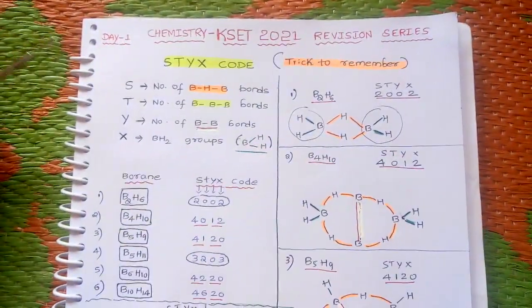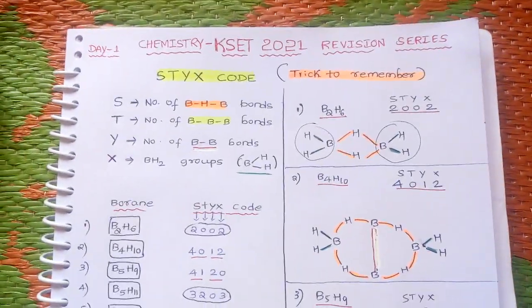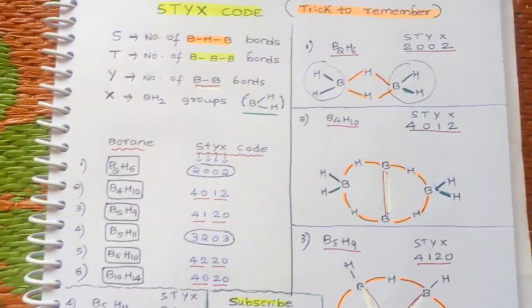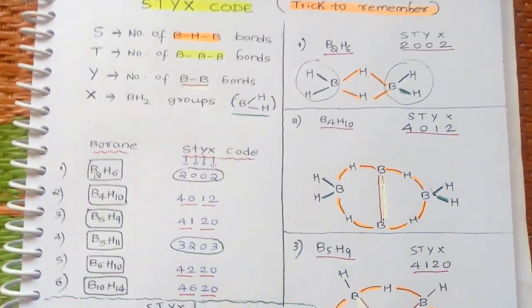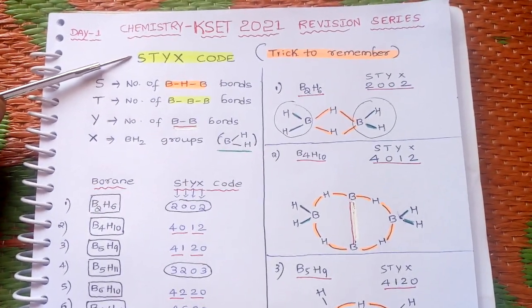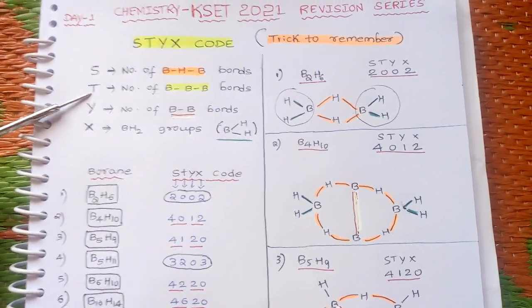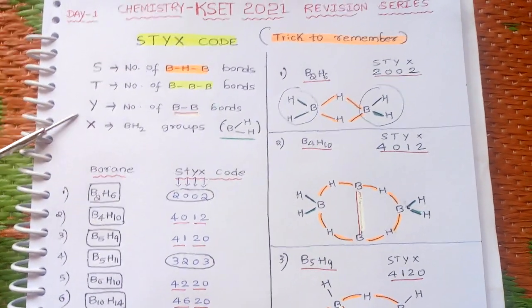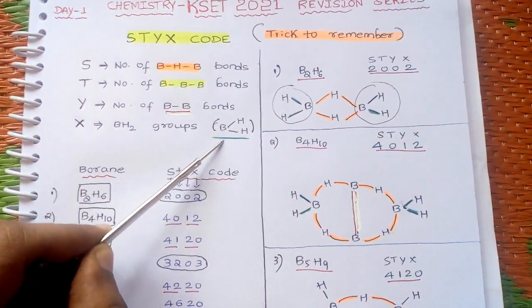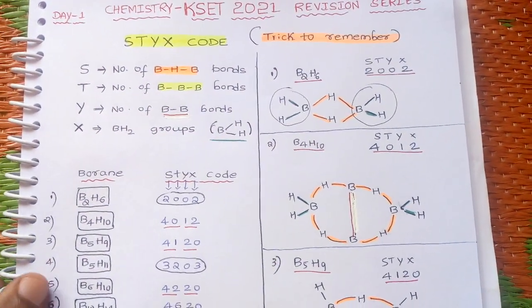First, I think many of you don't know the trick to remember the STYX code. I have made my own trick — I think it will help you. In the STYX code: S means the number of BHB bonds, T means number of BBB bonds, Y means number of BB bonds, and X means the number of terminal BH2 groups.